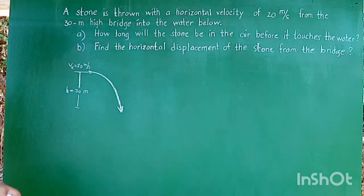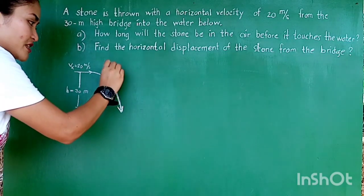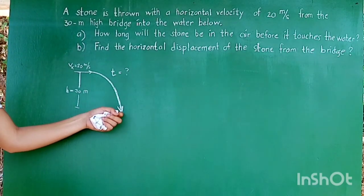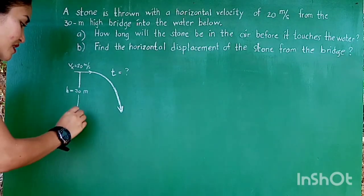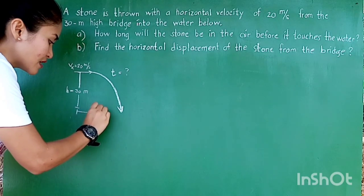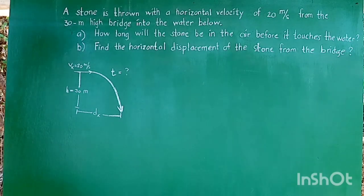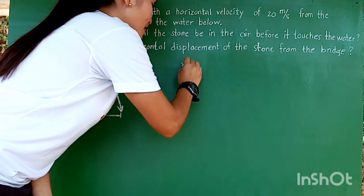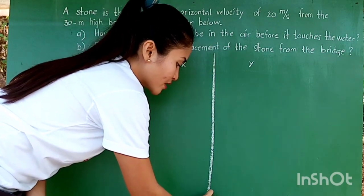First question, how long will the stone be in the air before it touches the water? So we are looking for time. The time it took for the stone to reach the water below from the top. And then, find the horizontal displacement, which is our DX. The second thing to do is to determine which of the quantities belong to the X and the Y component. So let us separate them because X and Y components of a projectile are independent to one another.